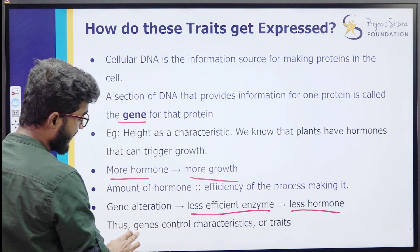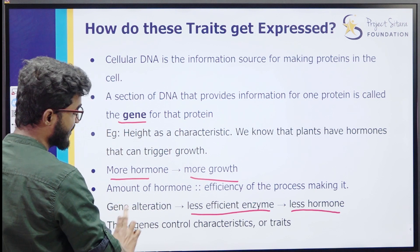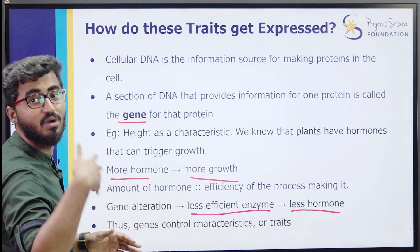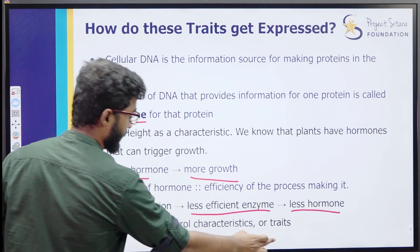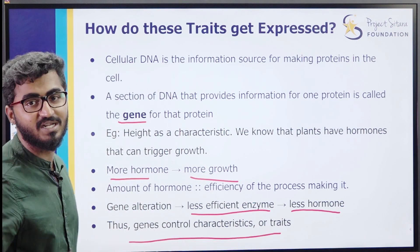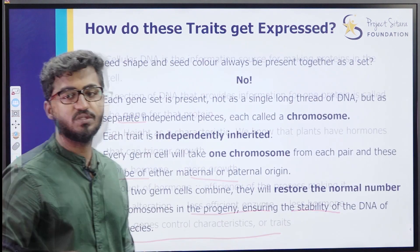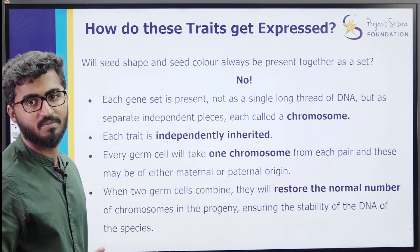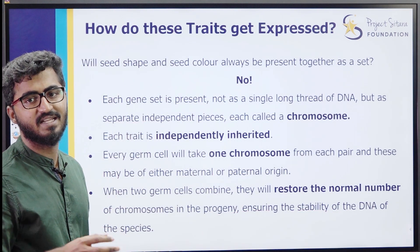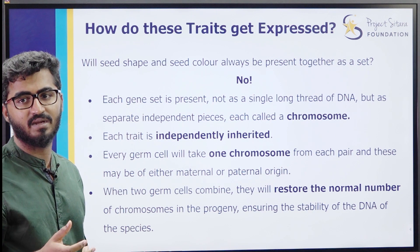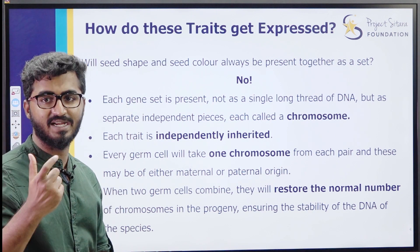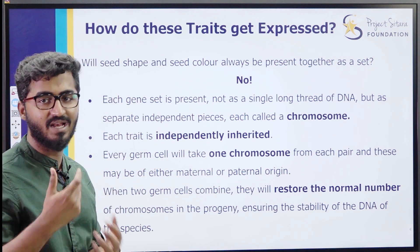So, less hormone produced means height is reduced. From this we understand that gene alteration controls a trait. This is how genes control characteristics or traits. Now a question arises - in Mendel's experiment, seed shape and seed color were seen to be separate traits.